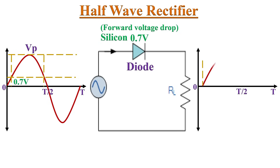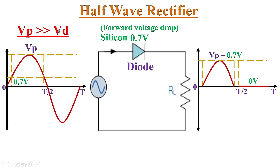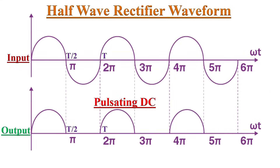Hence during the positive half-cycle of the input signal, the output waveform will appear after 0.7 volts and the peak voltage is less than Vp — that is Vp minus 0.7 volts. During the negative half-cycle of input AC voltage, because of reverse bias on the diode, the output voltage will be zero. In most cases the input peak voltage must be much larger than the forward voltage drop so that we may get an output waveform much closer to the ideal waveform.